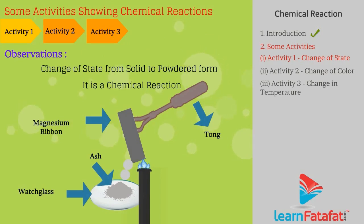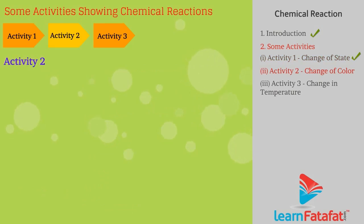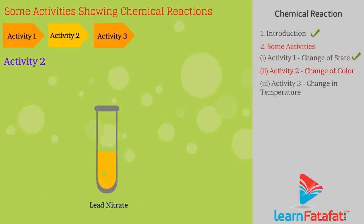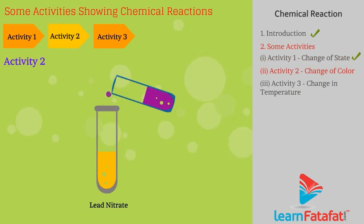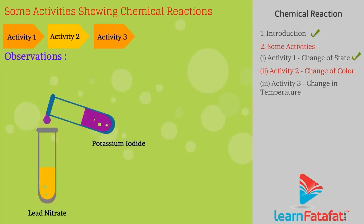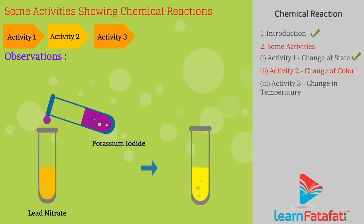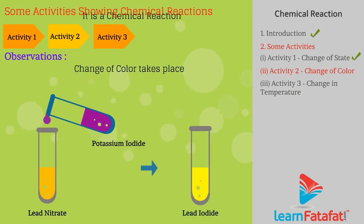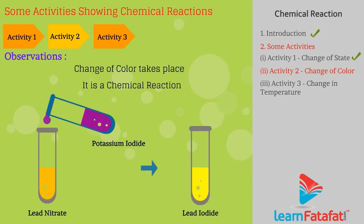Activity two: Take lead nitrate solution and add potassium iodide solution to it. Observation: After adding potassium iodide to lead nitrate, the solution changes to yellow color — a change in color — therefore it is a chemical reaction.